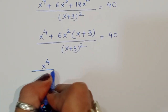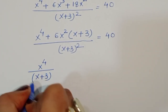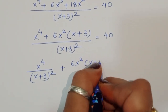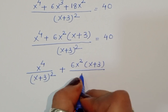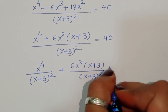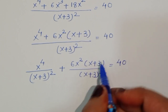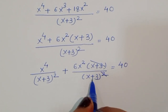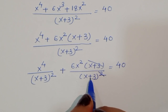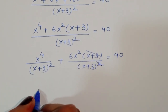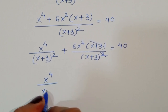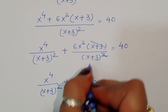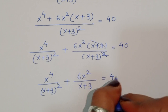We can separate this as x⁴/(x+3)² plus 6x² times (x+3)/(x+3)². Cancelling one (x+3) factor from the second term, this simplifies to x⁴/(x+3)² plus 6x²/(x+3) is equal to 40.